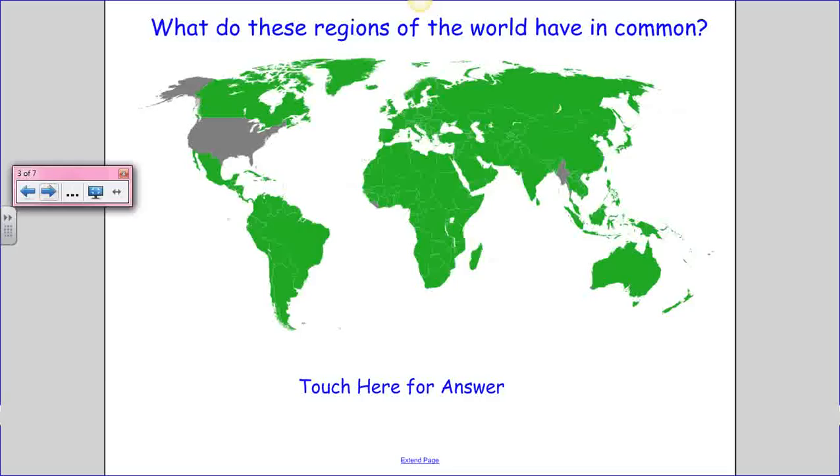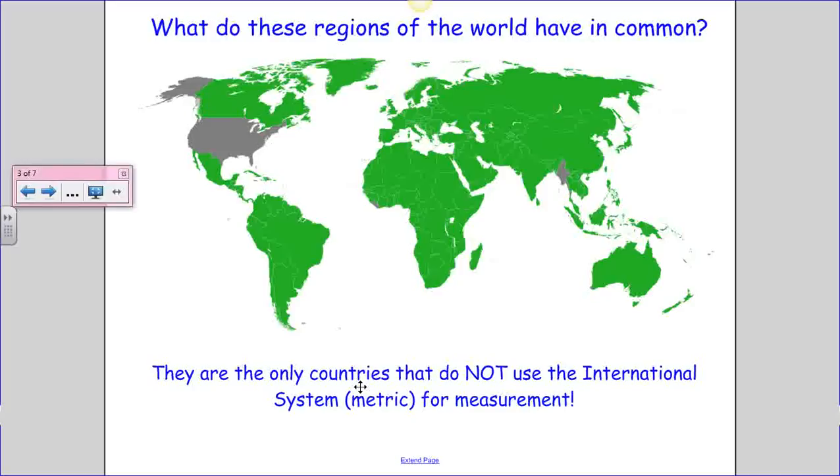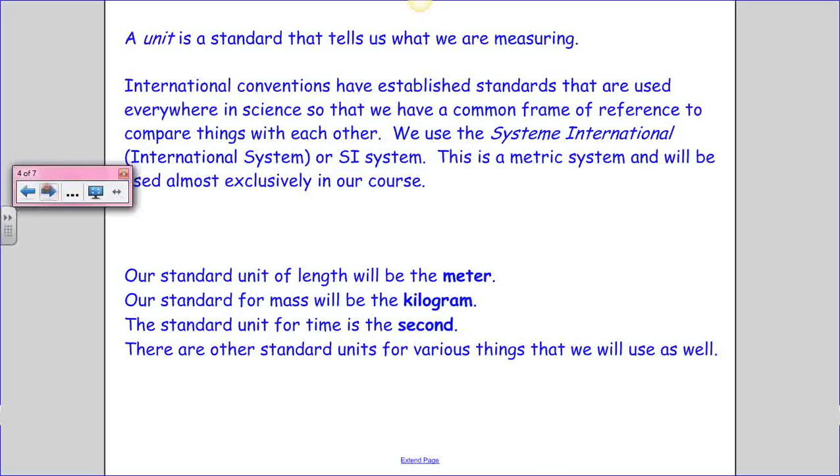So what do these regions of the world have in common? If you look at this map, there are four or five little spots on this map that are gray and not green. And they all have something in common. It turns out these are the only countries in the whole world that do not use the metric system. And we are included in that. The United States is gray, and it's because we measure things in feet and in pounds instead of meters and newtons.